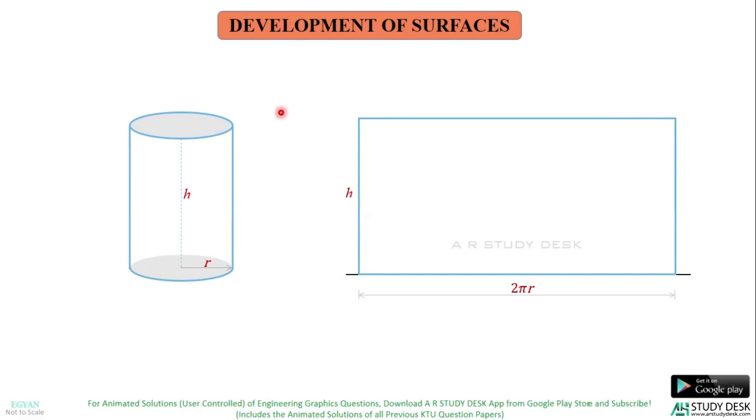Now, if you want to show the full development of this cylinder, you have to show two circles, one at the top and other one at the bottom. Like this. I can draw this circle anywhere on the top. Also, this circle anywhere at the bottom. Hope this is very clear to you.